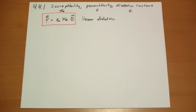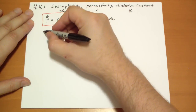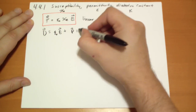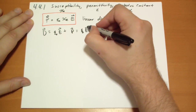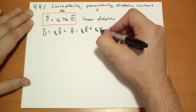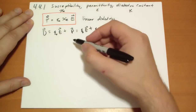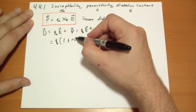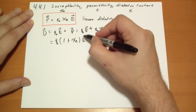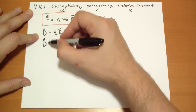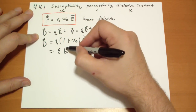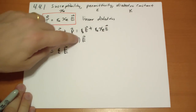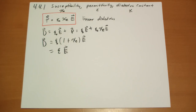Using D, where D equals ε₀E plus the polarization P, we can substitute: D equals ε₀E plus ε₀χ_e·E, which gives D equals ε₀(1 + χ_e)E. This is a good relation to know, and we have a shorthand for it.